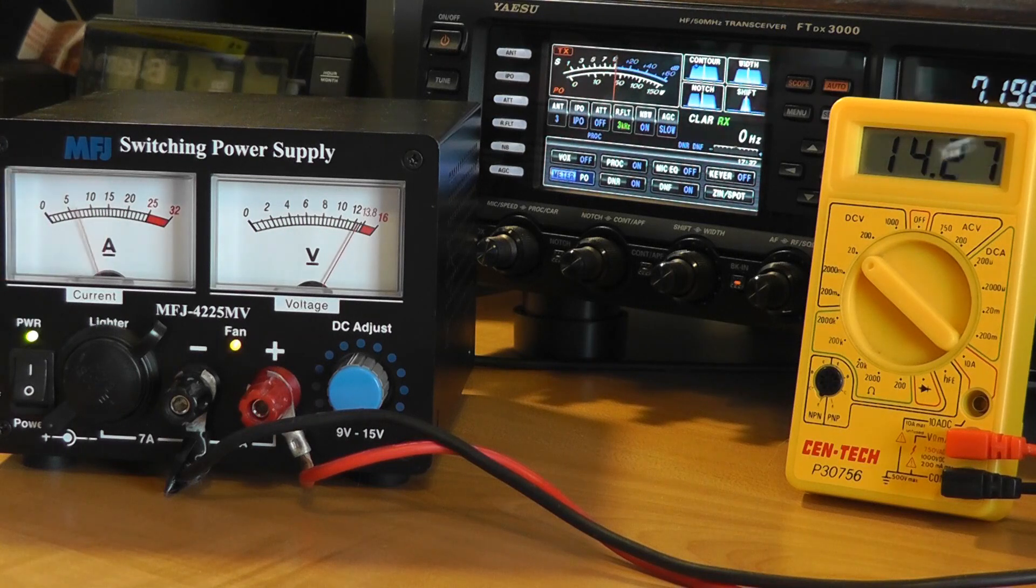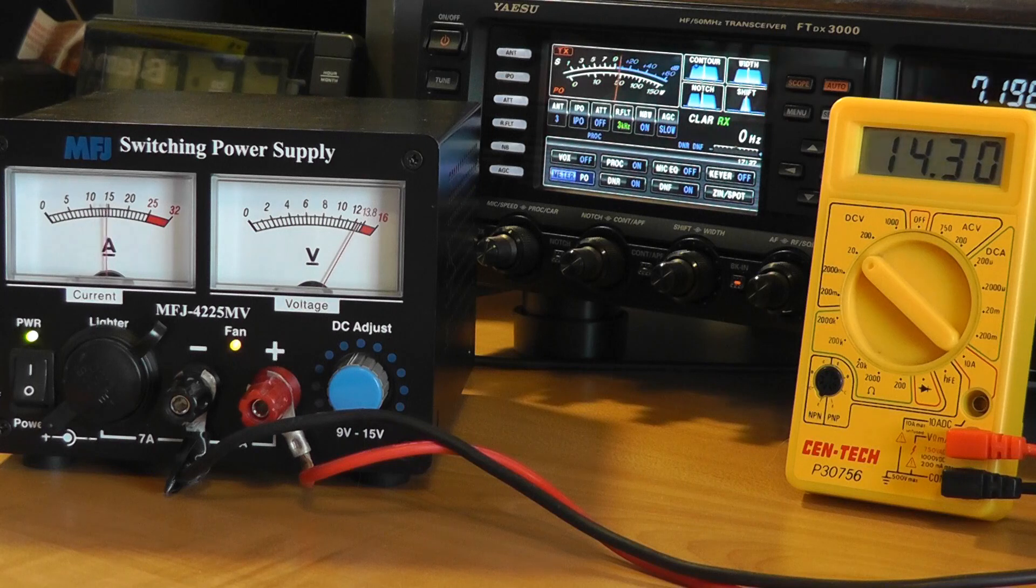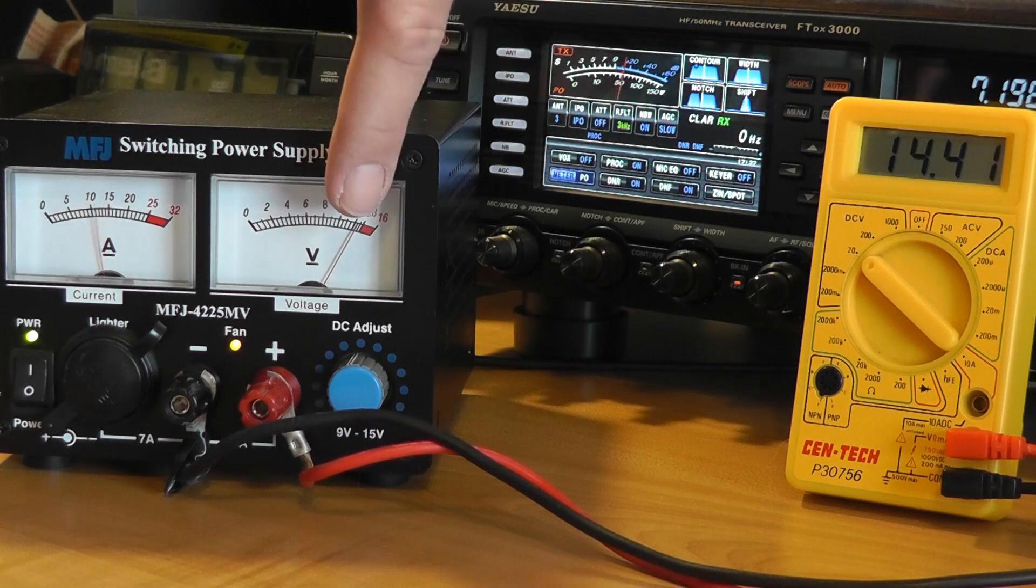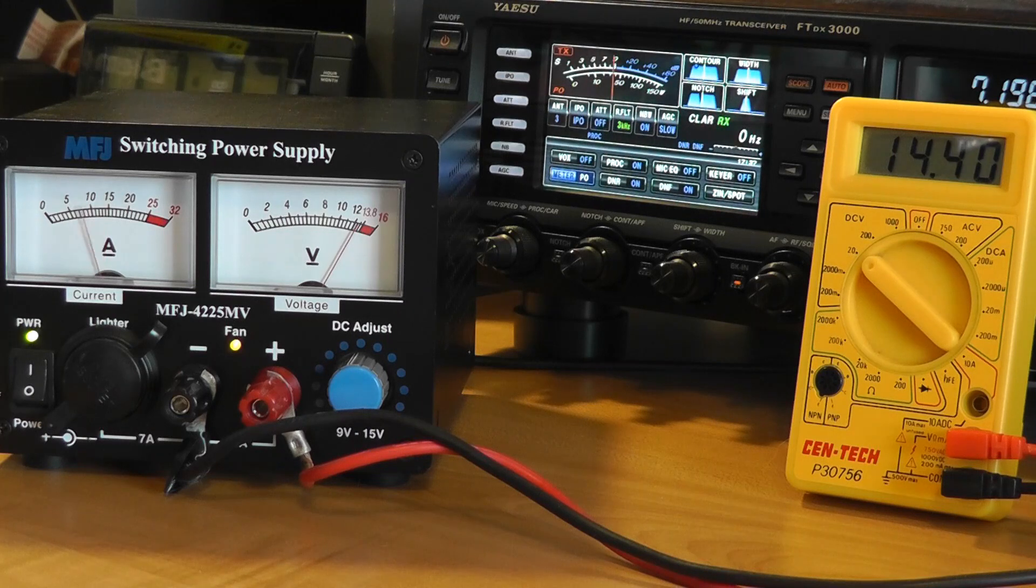But the load goes up dramatically on voice peaks, as shown in the left-hand meter, which measures current. But note the voltage meter on the right. It doesn't vary much. That's because the radio wants a fairly stiff supply voltage, meaning one that doesn't vary much with load.